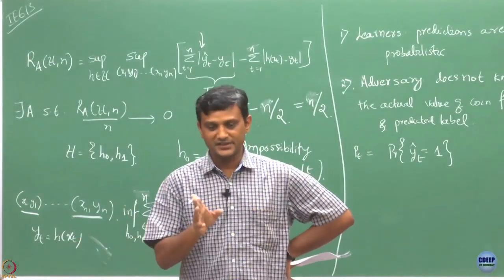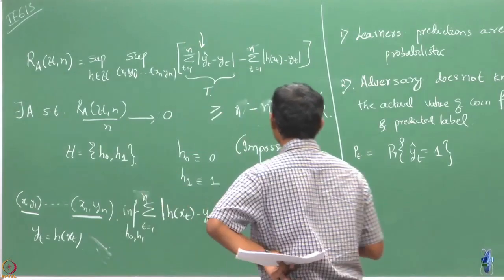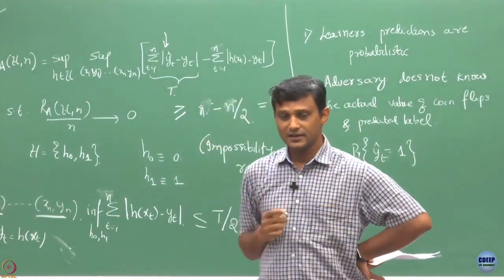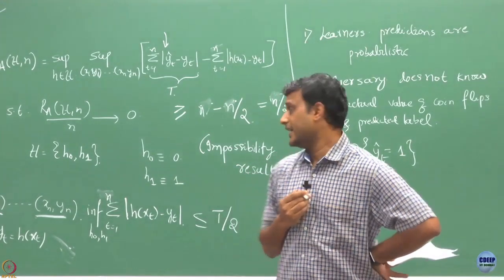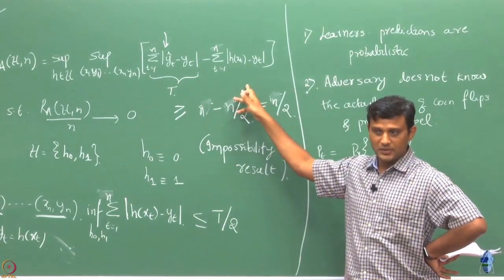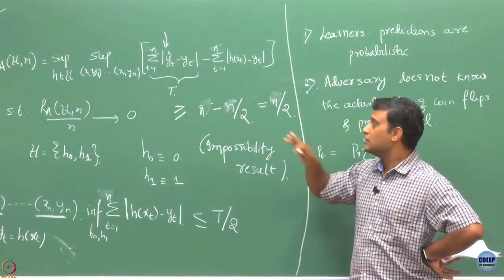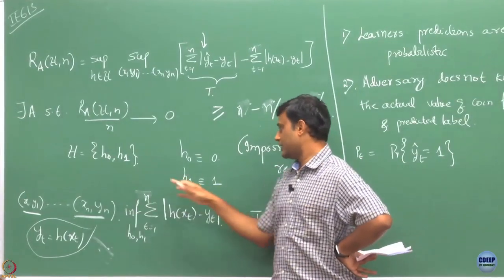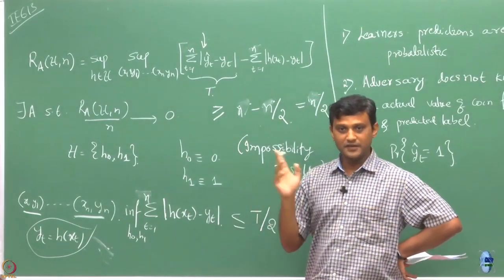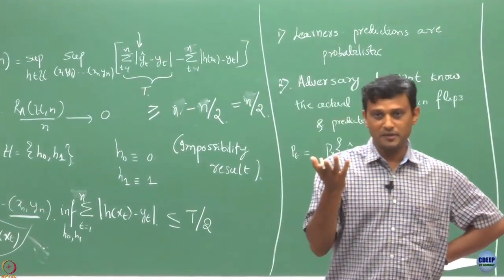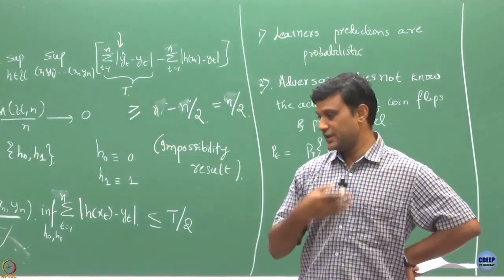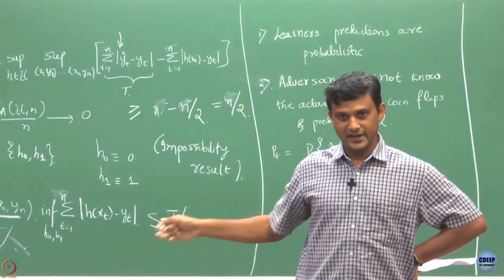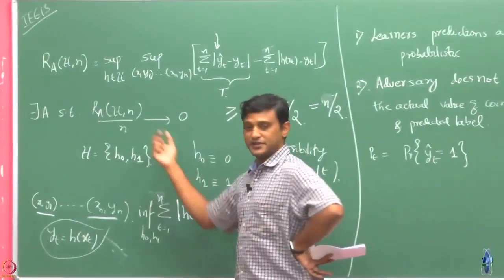If there is a hypothesis which matches the labels, that is fine. The question is what happens if there need not exist a hypothesis in the class. Right now this may not be obvious, but can we hold on this thought and see that without making this realizability assumption, we can show an algorithm such that sublinear regret holds? If we can eventually come up with such an algorithm, that will explain why it is possible. We will exactly do that.